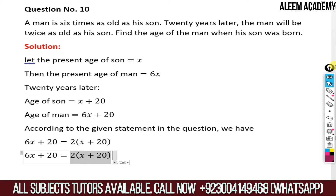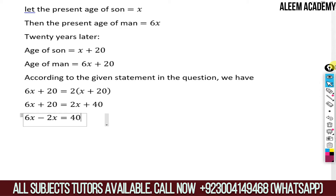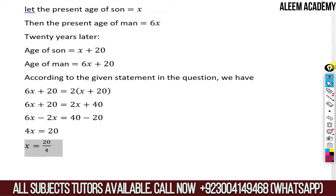Solving: 6x + 20 = 2x + 40. Move 2x to this side — it becomes minus 2x — and move 20 to the other side, giving 40 minus 20. So 6x minus 2x is 4x, and 40 minus 20 is 20. Dividing both sides by 4, we get x = 20 over 4.